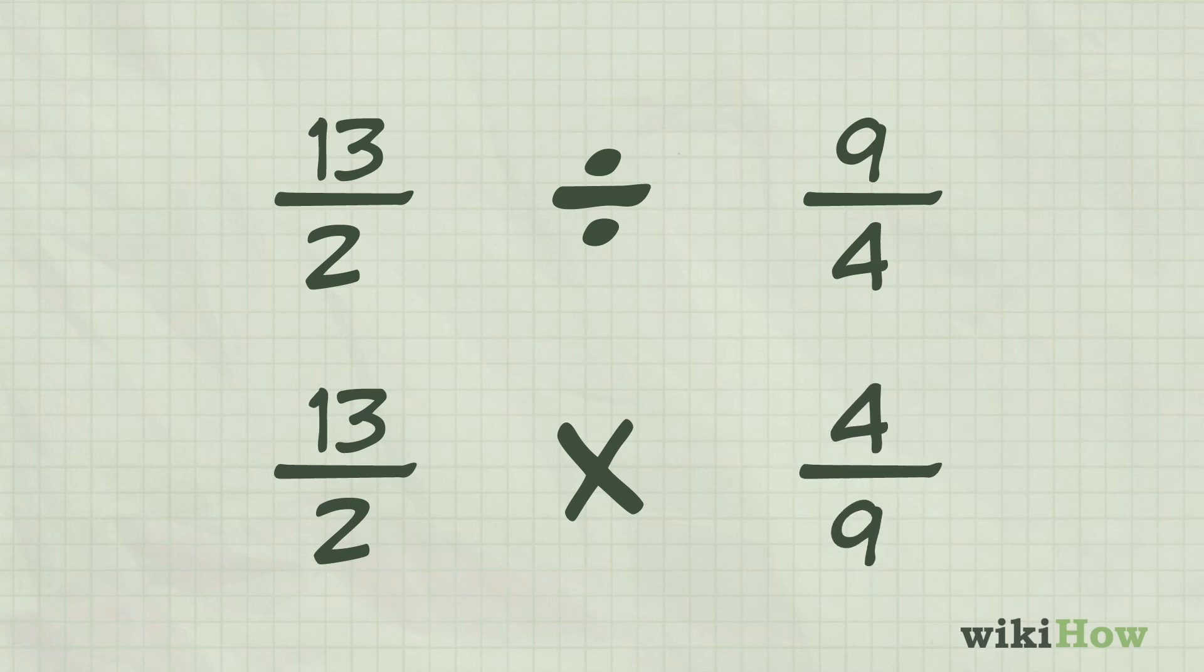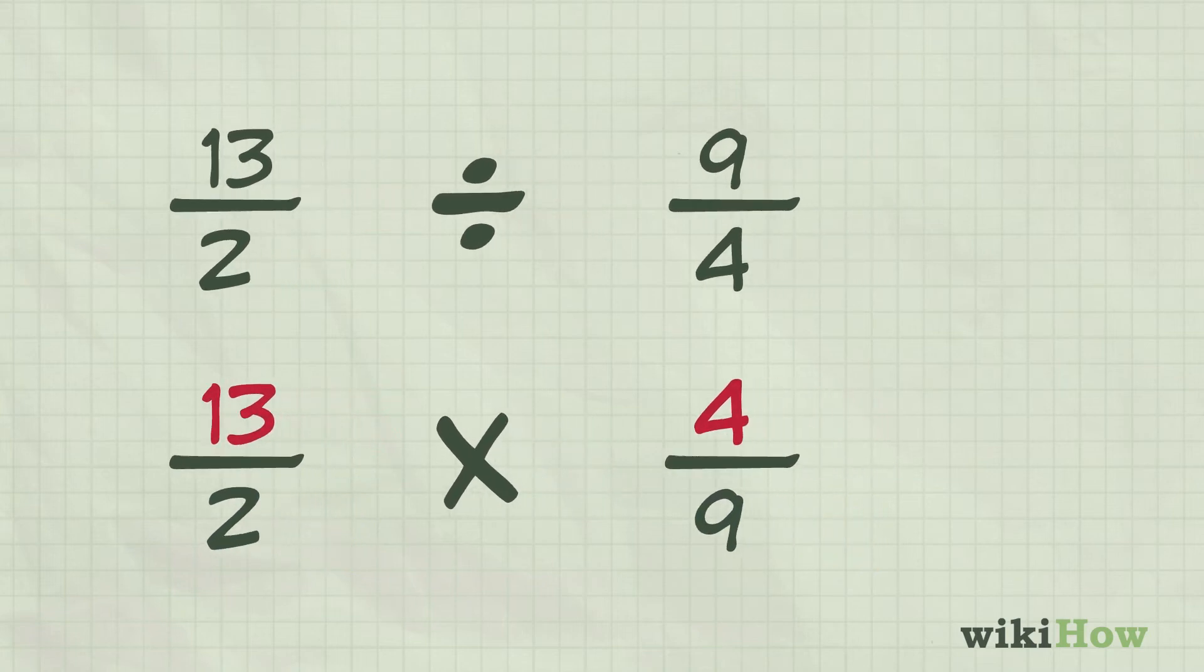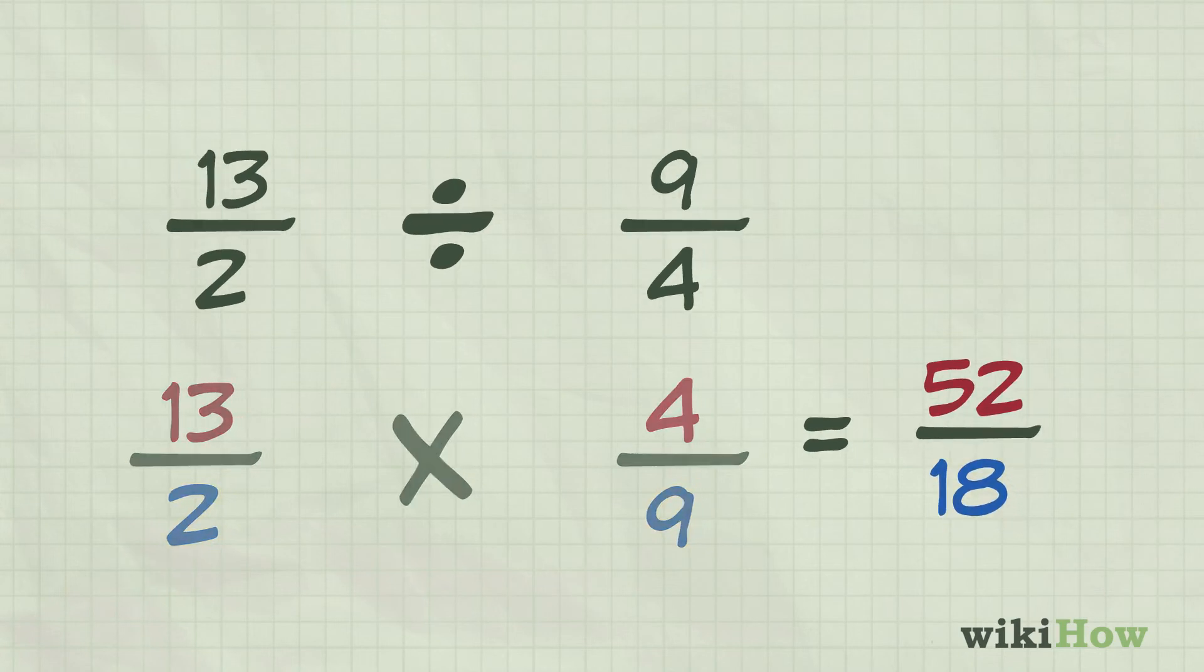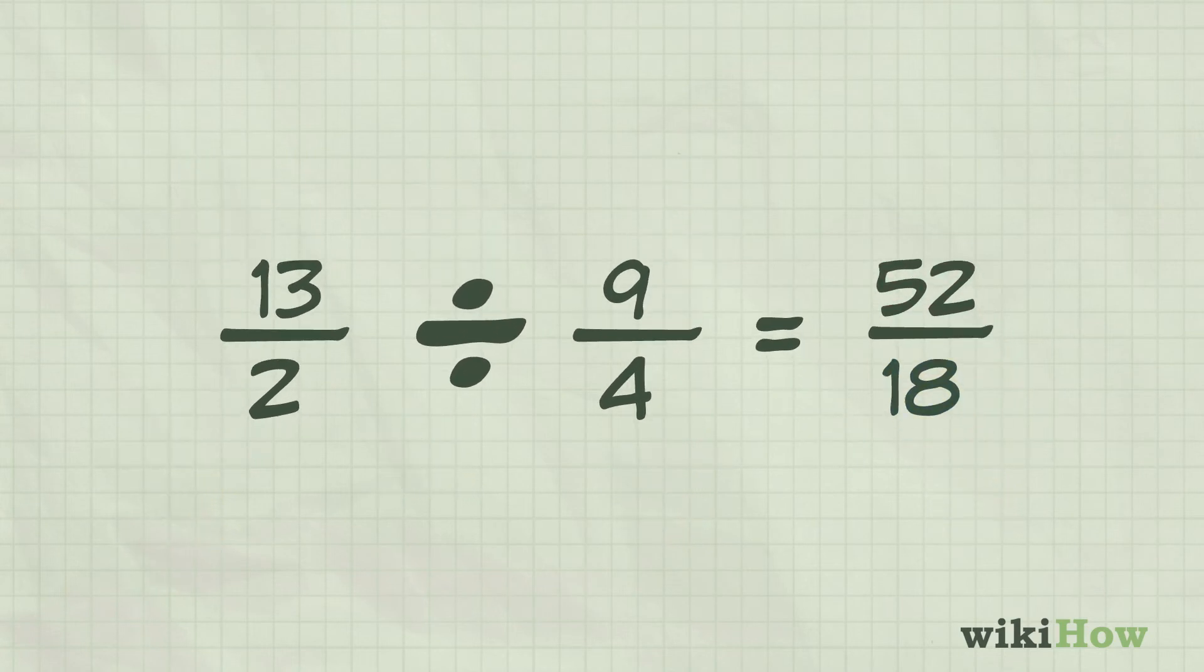Now all you need to do is multiply the numerators and denominators of the fractions together. 13 times 4 equals 52, and 2 times 9 equals 18. So 13 over 2 divided by 9 over 4 equals 52 over 18.